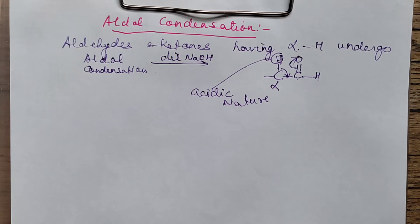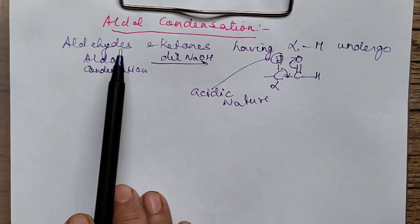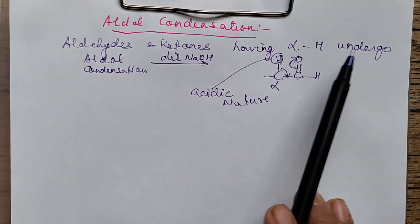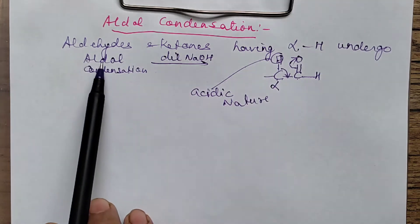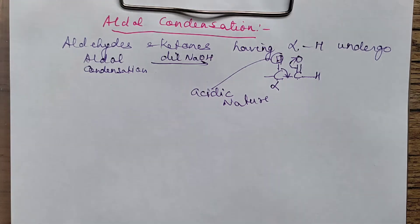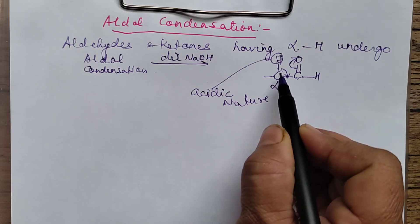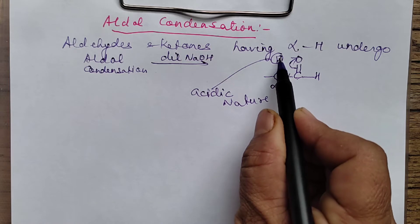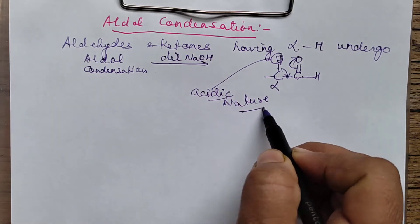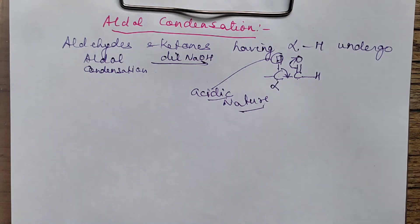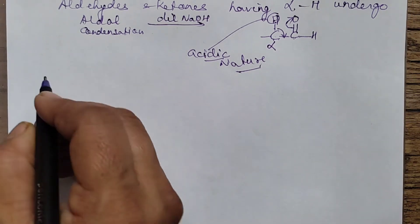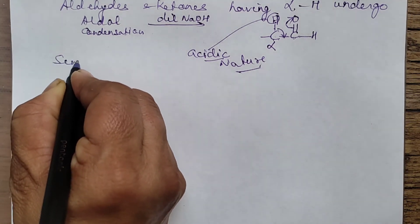So to summarize: aldehydes and ketones having alpha H undergo aldol condensation in the presence of a base. They undergo because the alpha carbon's hydrogen is more acidic in nature. Now we will take examples. First I am considering simple aldol — where the two aldehydes or two ketones participating are the same.